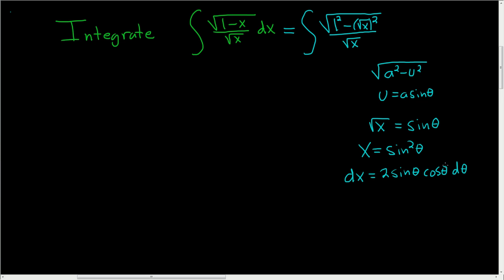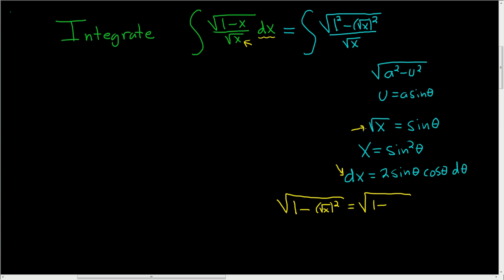Let's backtrack and see what we already have and what we need. We already have dx and the square root of x. The only thing we need is the numerator, the square root of 1 minus x. This is the square root of 1 minus (square root of x) squared. We said the square root of x was sine theta, so this is the square root of 1 minus sine squared theta, which equals cosine squared theta, giving us cosine theta.